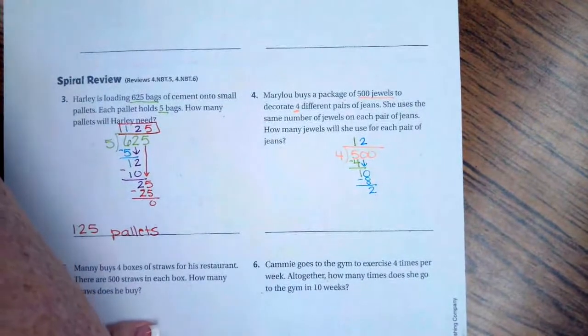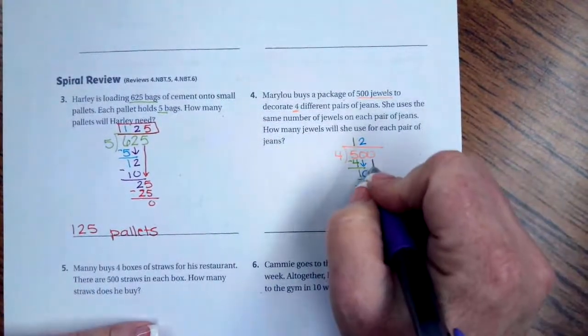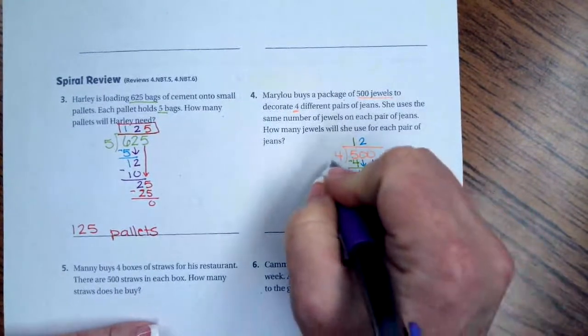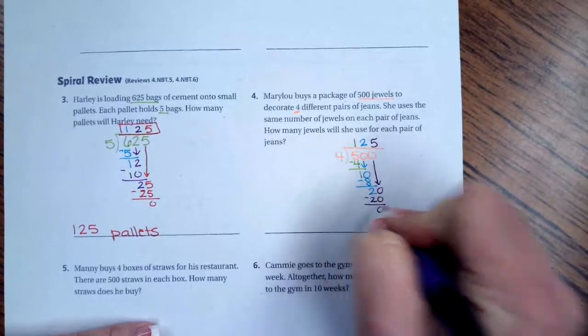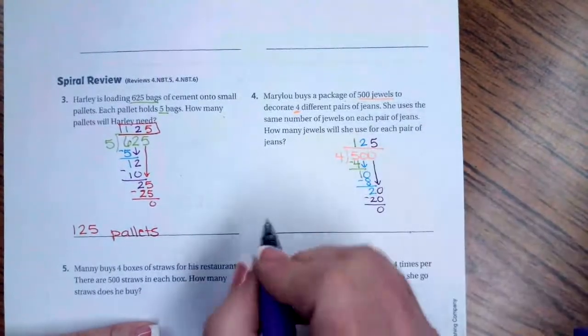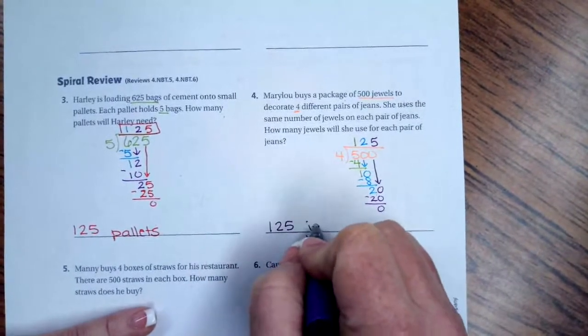Four goes into 20 five times. 5 × 4 = 20. I subtract, I get zero. We have 125 again, so 125 jewels.